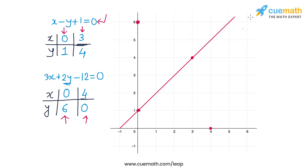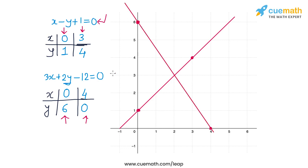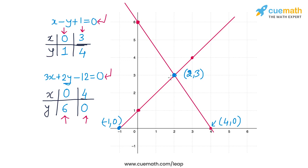The point (0, 6) is here and (4, 0) is this point here. I draw the line through these two points — this is the solution line of the second equation. The two lines intersect at the point (2, 3), with x-coordinate 2 and y-coordinate 3. The first line intersects the x-axis at (−1, 0) and the second line intersects the x-axis at (4, 0).